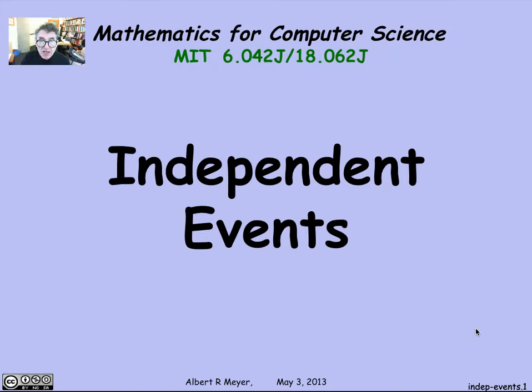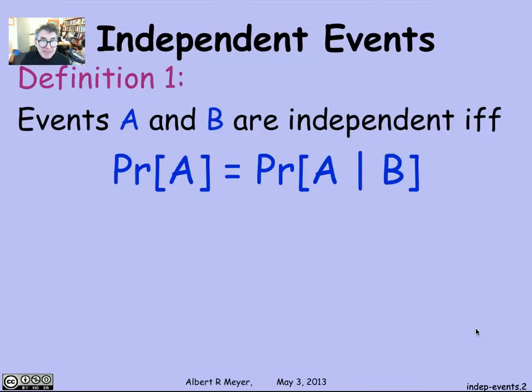Let's look at a formal definition now in this short video of just what is the technical definition of independent events. So, what we said is that they're independent if they have nothing to do with each other. What that means is that if I tell you that B happened, it doesn't have any effect on the probability of A. That is, the probability of A given that B happened doesn't change the probability of A at all.